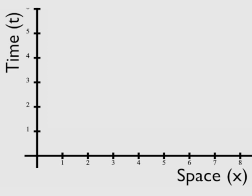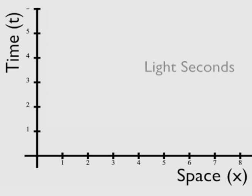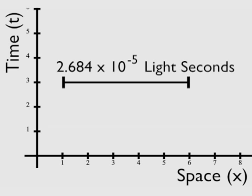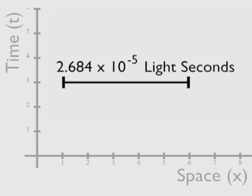For these graphs, the units of measurement are in seconds for both time and distance. For distance, this is achieved by measuring in light seconds — the distance that light can travel in one second. So if you were giving directions to a person using a spacetime diagram to navigate, you wouldn't tell them to travel five miles and make a left. Rather, you would tell them to go 2.684 times 10 to the negative fifth light seconds and then turn left.